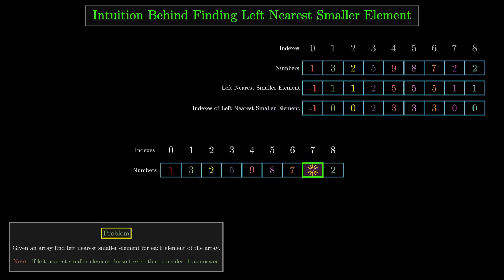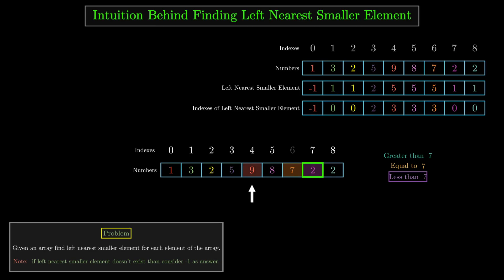Let's try to find the LNS of 2. The first left nearest element for 2 is 7, but 7 cannot be the answer because 7 is greater than 2. As we move left, we will encounter elements greater than, equal to, or less than 7. Since 7 cannot be the answer for 2, all elements greater than or equal to 7 are also not valid. We only consider elements less than 7. Eight is greater than 7 so we skip it. Nine is also greater so we skip it. Five is smaller than 7, so we check it — but 5 cannot be the answer for 2 because 5 is greater than 2.